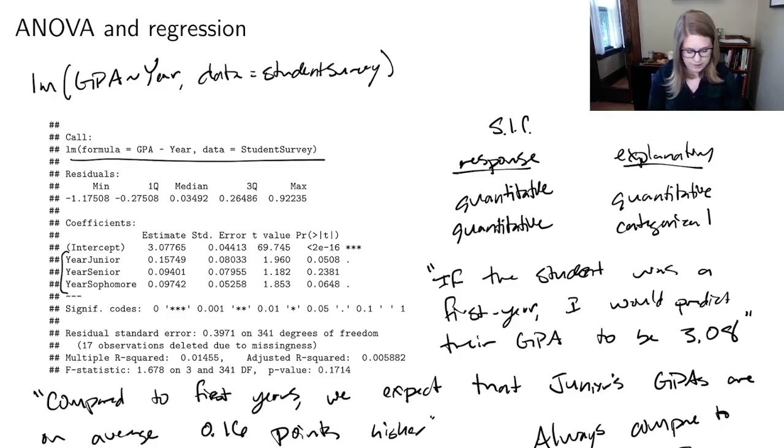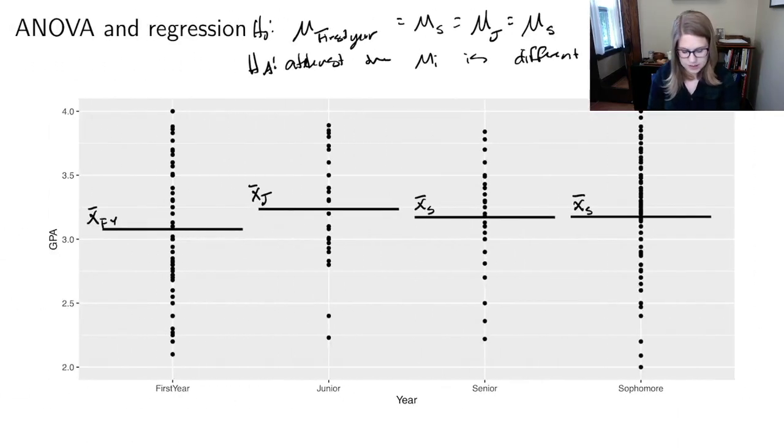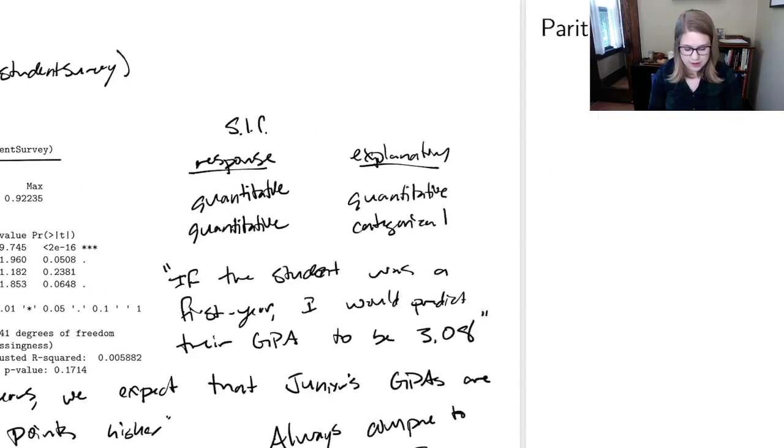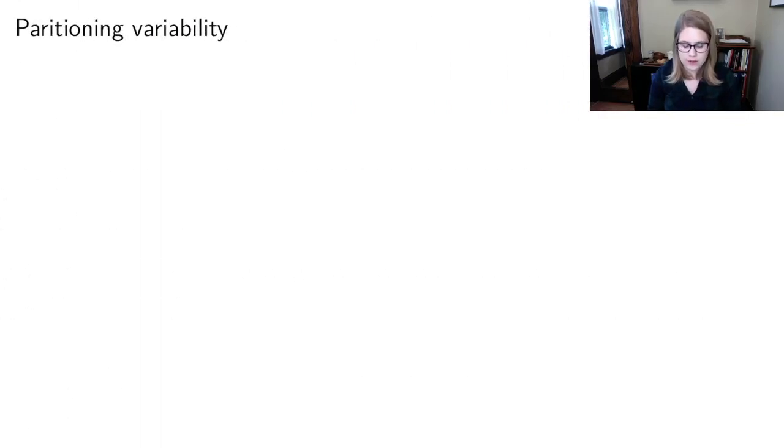And essentially, what that LM has done is it has picked each of these means, and it said that's what we're going to use for the prediction. But in this class, we're going to go further with ANOVA. It's not just going to be checking to see if means are equal or one another. We're going to be thinking about ANOVA as a way of partitioning the variability.